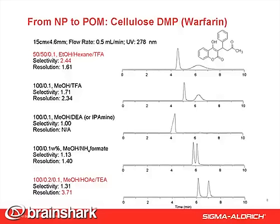The story begins with chiral warfarin separation going from normal phase to polar organic phase using different types of additives. The first, normal phase, shows the best selectivity, but peak two is very broad. I switched to 100% methanol with TFA additive — the result is better, but not good enough. The third, when using DEA to replace TFA, there is no retention or selectivity at all. Then I switched to ammonium formate, which shows almost baseline separation. And then switching to typical polar ionic mode for the chiral biotic with the acid-base at a 2-to-1 ratio gives the best result of all five cases.